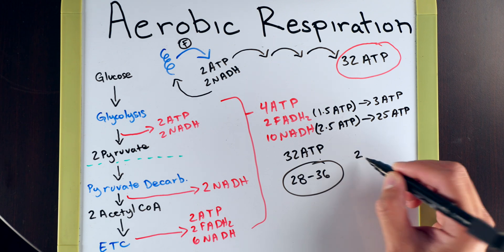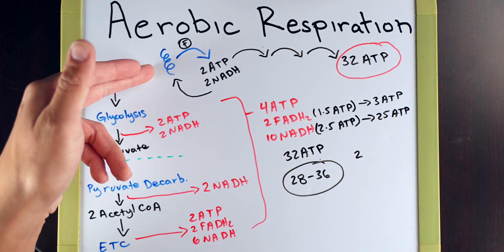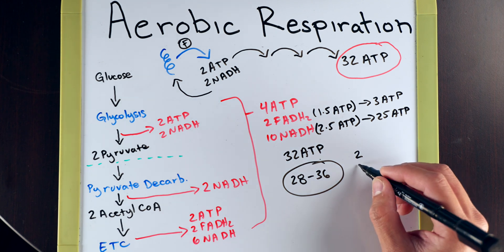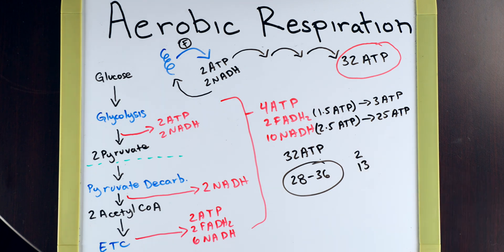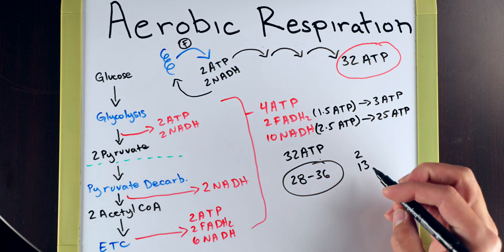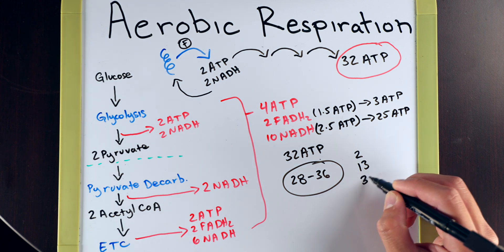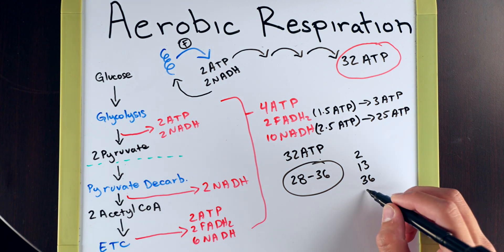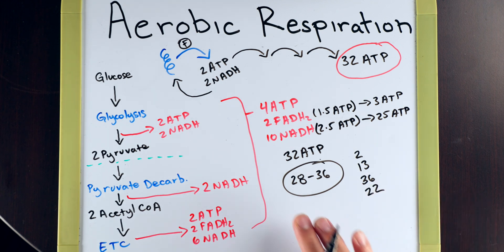So, they could say two, which would be related to fermentation. They could also say 13, not related at all. They might even say 36. This would be the right answer. And then another wrong answer would be 22. 22 is not close to 28. So, just remember 28 to 36. That's the range that you can expect when going through the electron transport chain.